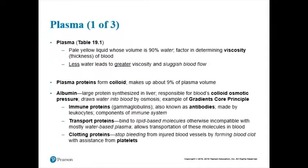If you were to just get straight plasma, it would look kind of yellowy pale — very similar to urine. Why? It's mainly water; that's why it's pale. Most of your body is water, so your blood's no different. Plasma is actually about 90% water. You don't want less water in your blood because it will get thicker. You don't want sluggish blood going through your blood vessels — you want it to go pretty smooth and fast. So you have water to decrease the viscosity, to make it less thick.